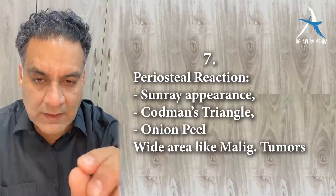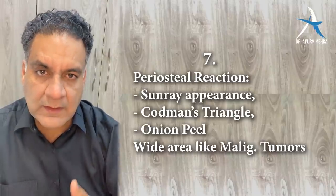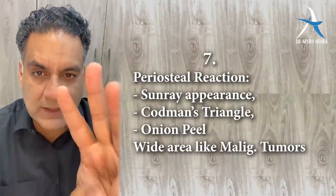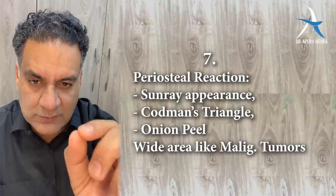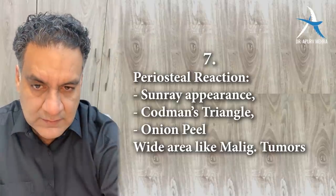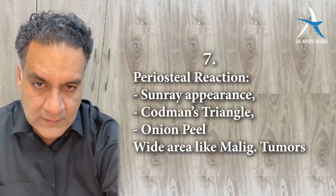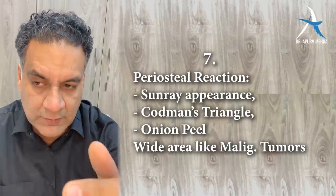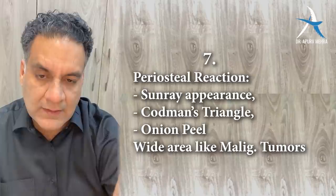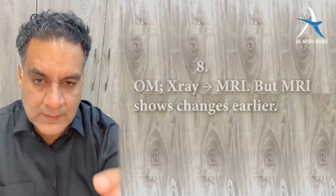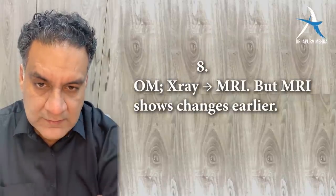The three periosteal reactions every student of medicine should remember are: sunray appearance, Codman's triangle, and onion peel appearance. These are usually indicative of a chronic process and, in the MCQ world, more indicative of malignancies. Point number eight: for infections — osteomyelitis — the first investigation done is X-ray, but the first investigation that becomes positive is MRI. Remember that.